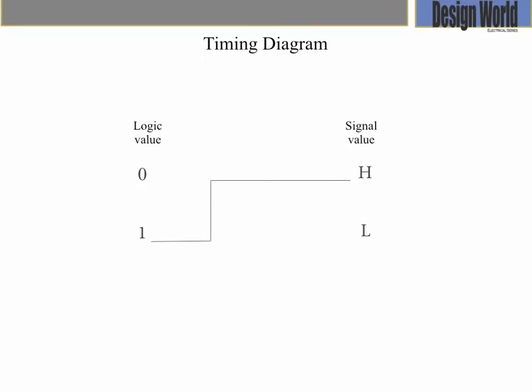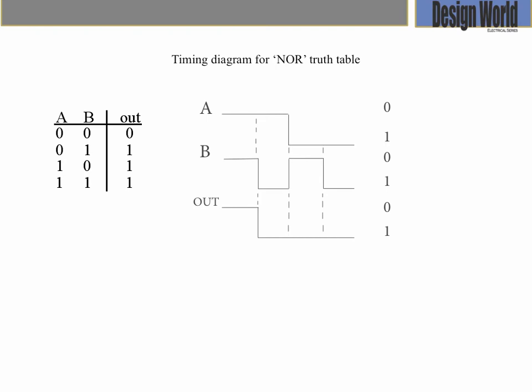The timing diagram shown is the negative logic assignment for the physical OR gate. However, in this case, it represents the NOR gate. As you can see from the truth table, the timing diagram corresponds to the logic values.